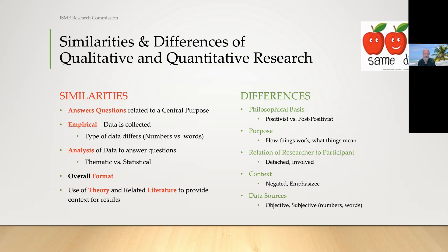Some of the differences: the positivist versus post-positivist philosophical basis makes it hard to necessarily equate the two types of research. One thing that has always driven me nuts is qualitative or quantitative researchers — whatever side you happen to be on — using the criteria of one research paradigm to critique the other. They have different things that are important in each research type. As a quantitatively trained person, I can't use quantitative criteria when looking at a qualitative study. It just doesn't work and it shouldn't be what I do.